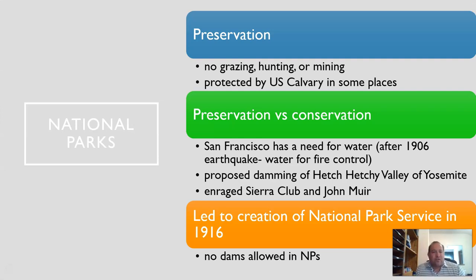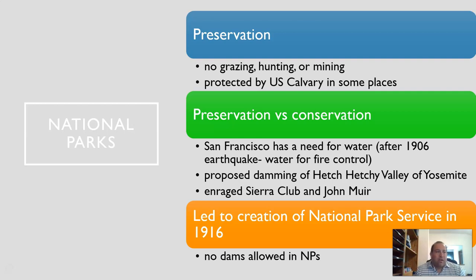With national parks, the decision was that these areas are to be set aside and enjoyed by people, but not depleted of their natural resources — no grazing, no hunting, no mining was allowed. That was hard for some settlers in the West who felt these were areas where they could get their livelihood. Roosevelt had to even put the cavalry in some places to keep people out of national parks.